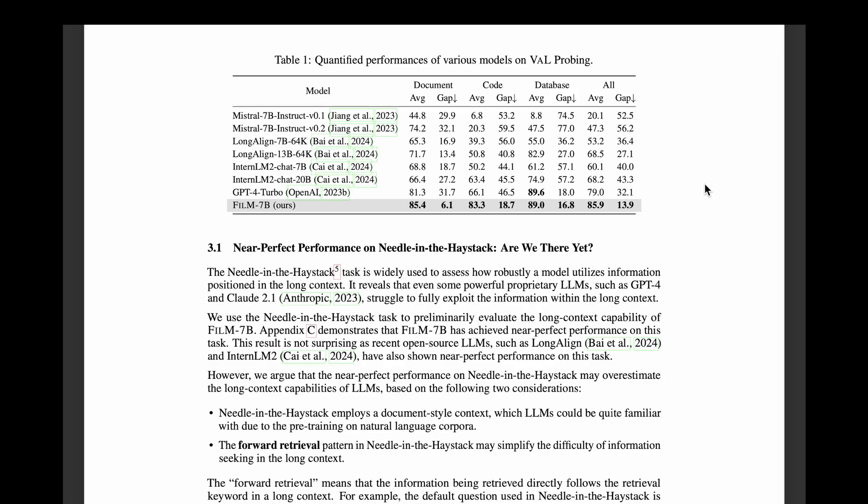So on top of studying the lost in the middle problem, they go all the way to do quantitative analysis. So they come up with these figures for the average score, which is the average performance across the entire context, reflecting the overall long context utilization. And the second one is the gap score, which is the min-max gap, calculated by the difference between the maximum and the minimum performance. And as we can see, they have even compared it with GPT-4 Turbo, which is quite state-of-the-art. But they have compared it with Mistral 7B, LongAlign, InternLM2, and GPT-4 Turbo. And we can see that clearly FiLM 7B seems to outperform all of these models.